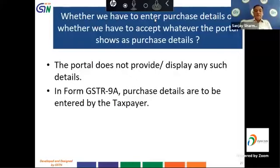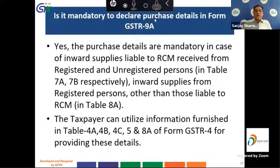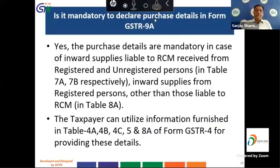The next question is: do we have to enter purchase details or accept whatever the portal shows? The portal does not provide or display any such details in GSTR 9A — purchase details are to be entered by the taxpayer. Is it mandatory to declare purchase details in GSTR 9A? Yes — purchase details are mandatory for inward supplies liable to RCM from unregistered persons in Tables 7A and 7B, and inward supplies from registered persons not liable to RCM in Table 8A. The taxpayer can utilize information from Tables 4A, 4B, 4C, 5, and 8A of form GSTR 4.